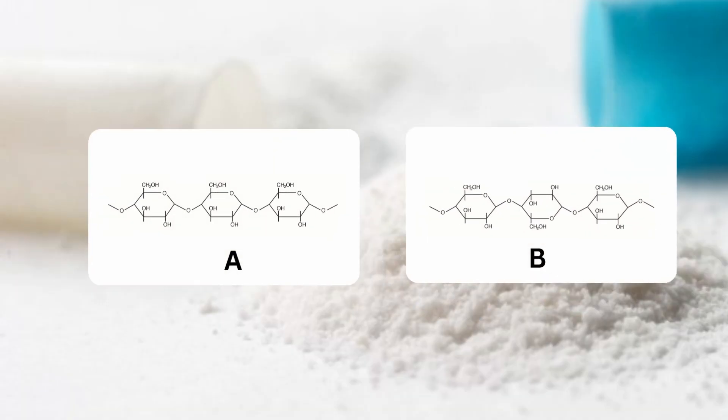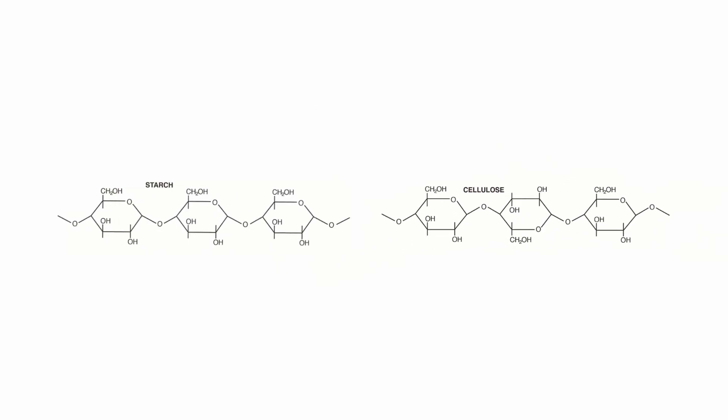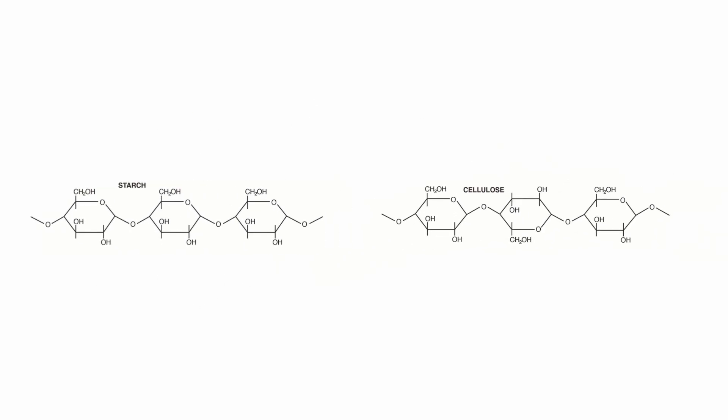Nancy, at the start of this video, we gave our viewers a challenge to identify which structure was cellulose and which one was starch. Could you now reveal the answer? Cellulose and starch are both homopolysaccharides. Both substances are composed of glucose residues, although there are small differences in their glycosidic patterns and secondary structures.